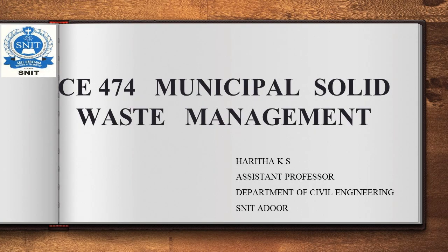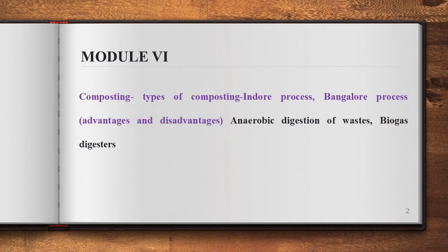Hello everyone, welcome back. Today we will start the 6th module of Municipal Solid Waste Management. This module covers Silver composting in the portions: composting, types of composting, two methods, indoor process, Bangalore process, its advantages and disadvantages, anaerobic digestion of waste and biogas digester.